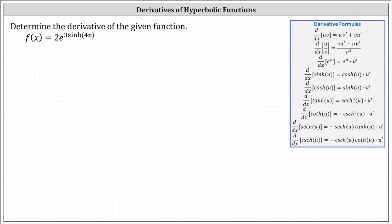Determine the derivative of the given function. We are given f of x equals two times e raised to the power of three hyperbolic sine of four x.